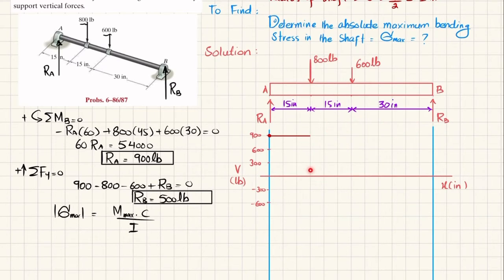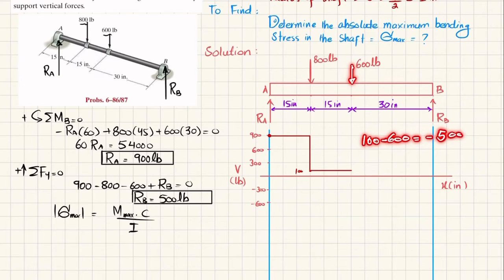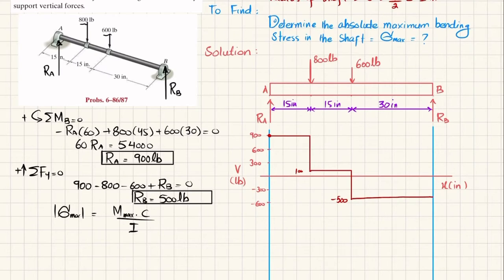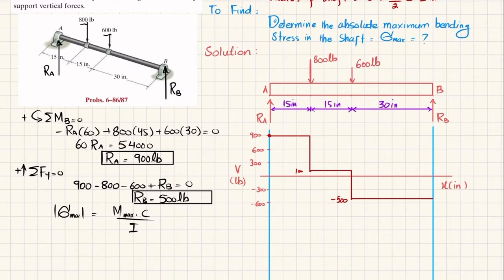At the 800-pound load, 900 minus 800 brings shear force to 100. Moving from that point to the next applied load, there is no other shear force, so it remains horizontal. At the 600-pound load, 100 minus 600 equals minus 500, so shear force changes to minus 500. Moving from that point to the end, at the end R_B equals plus 500, so minus 500 plus 500 returns to zero.